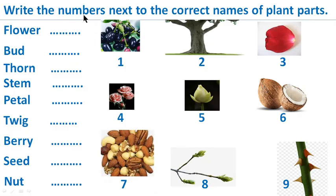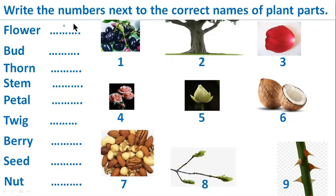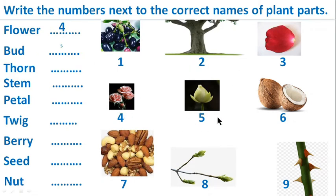Write the numbers next to the correct names of the plant parts. These are parts of plants. Flower — which number is flower? Number 4. Yes, flower is 4, so we write 4 here. Bird — which one is bird? Number 5. Yes, this is bird, so we write 5 here.